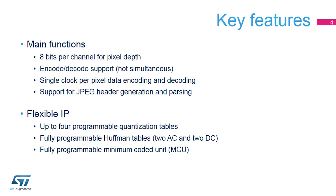The JPEG Codec works with a standard pixel depth of 8 bits per channel. Encode and decode processes are fully implemented in hardware, but cannot operate simultaneously. Encoding and decoding processes are very efficient, allowing a throughput of 1 pixel data per clock cycle. JPEG headers can be handled automatically without any CPU load, thanks to the embedded header parser and generator. The JPEG tables needed by the Codec are fully programmable. The Codec supports up to 4 quantization tables and 4 Huffman tables.